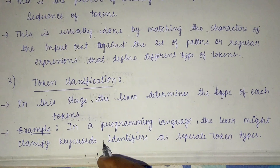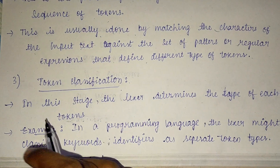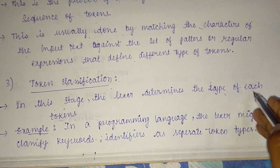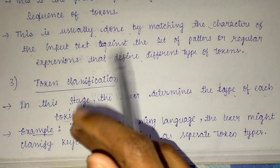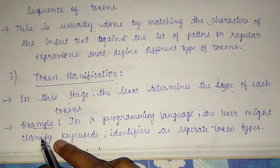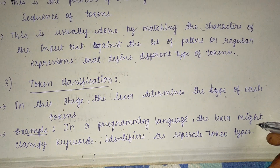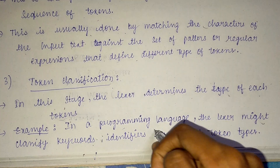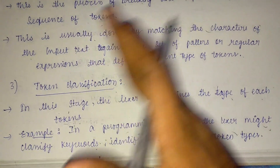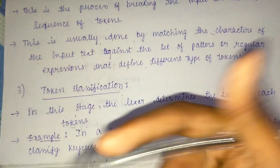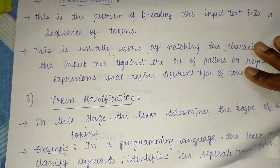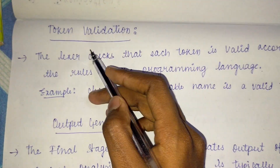The third step is token classification. In this stage, the lexer determines the type of each token. For example, in a programming language, the lexer might classify keywords and identifiers as separate token types.